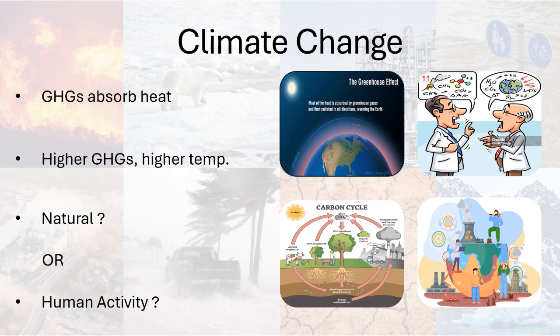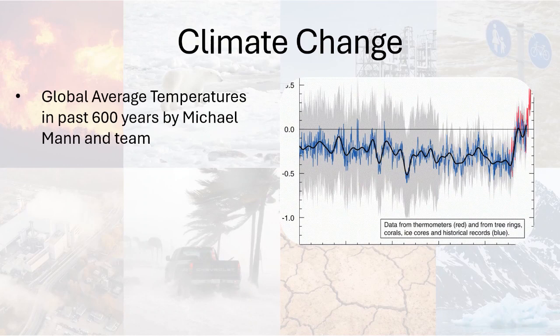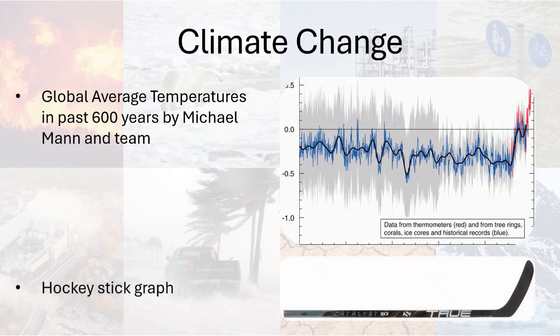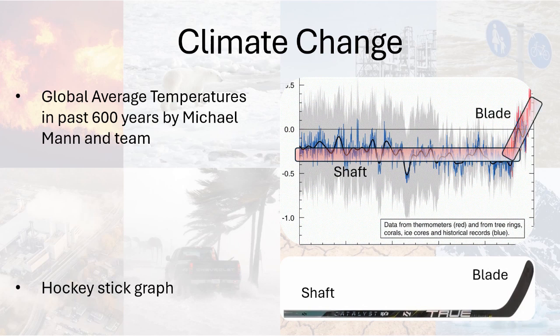To support the claim that global warming is man-made, there are two famous graphs discussed more frequently. The first one was presented by a team of scientists led by Michael Mann in 1998, showing the global temperatures of Earth in the past 600 years. The graph later became well known by the term hockey stick graph, because the relatively stable temperatures of the past 600 years resemble the shaft of the hockey stick, and the sudden climb of temperatures imitates the blade.